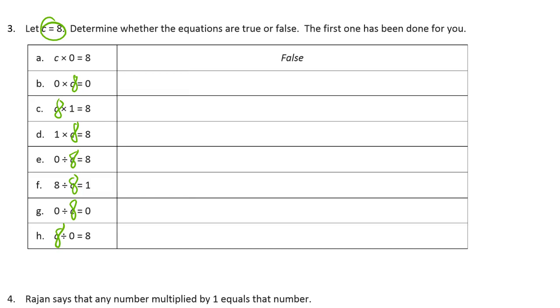0 times 8 equals 0. Well, 0 times anything should be 0, so that's true. 8 times 1 equals 8. Any number times 1 should be itself. That's true.